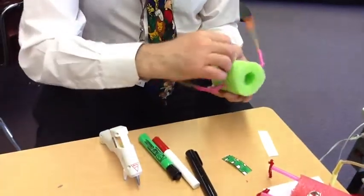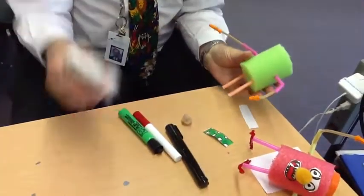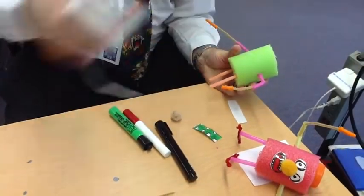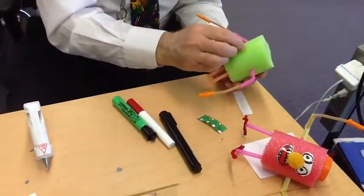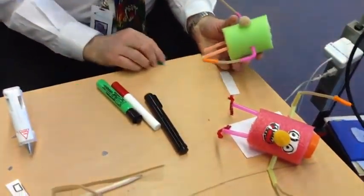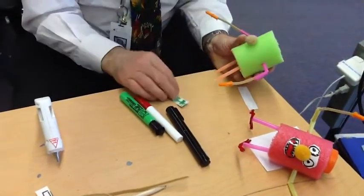There we go. Glue the nose about half way down the head. Right there. Put it on the scary mouth.